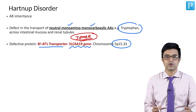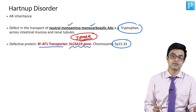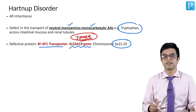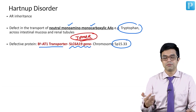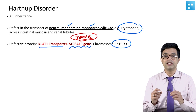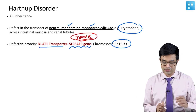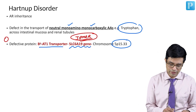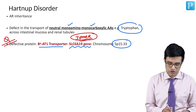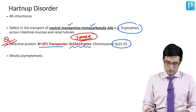This is already an asked question in a central institute's PG entrance exam. It can be repeated in super-specialty exams asking for the name of the gene and the transporter. So this is an important point and can be a potential MCQ.